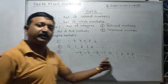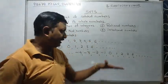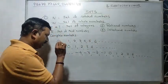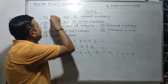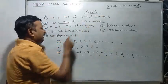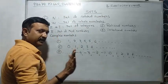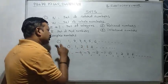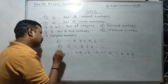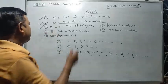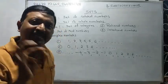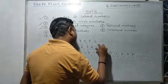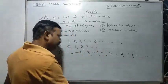The decimal number, fraction three by two, and natural numbers — these are the set of natural numbers. Decimal number, fraction, one number, whole number zero. Integers are denoted by Z or I, indicating whole numbers from negative infinity.